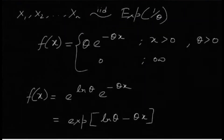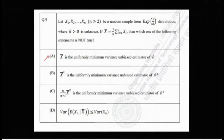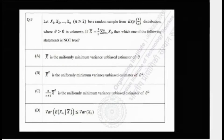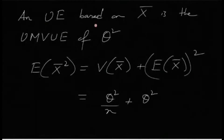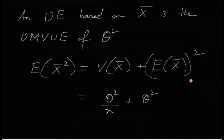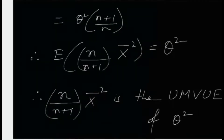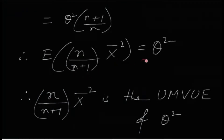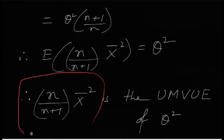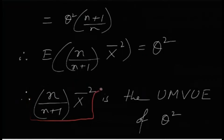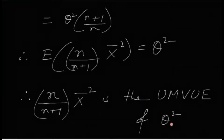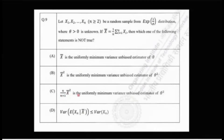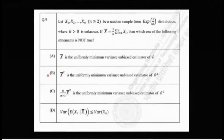So option A — x̄ is the UMVUE of θ — is true; it is not the false statement. Now, is x̄² the UMVUE of θ²? Let us take E[x̄²] = Var(x̄) + (E[x̄])² = θ²/n + θ². This means E[(n/(n+1))·x̄²] = θ². So (n/(n+1))·x̄² is an unbiased estimator of θ², and being a function of x̄ (the complete sufficient statistic), it is the UMVUE of θ². Option C is therefore true.